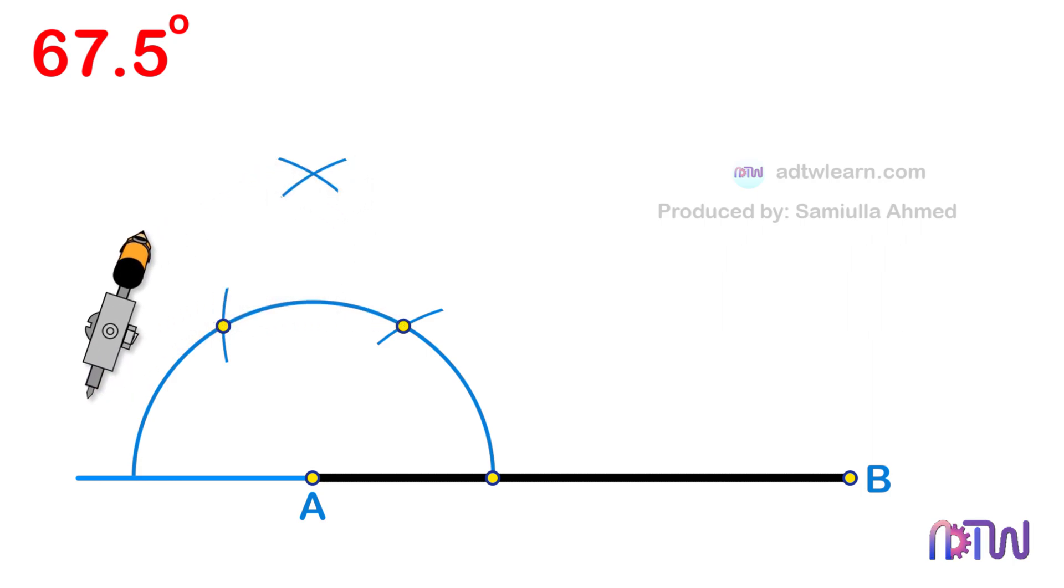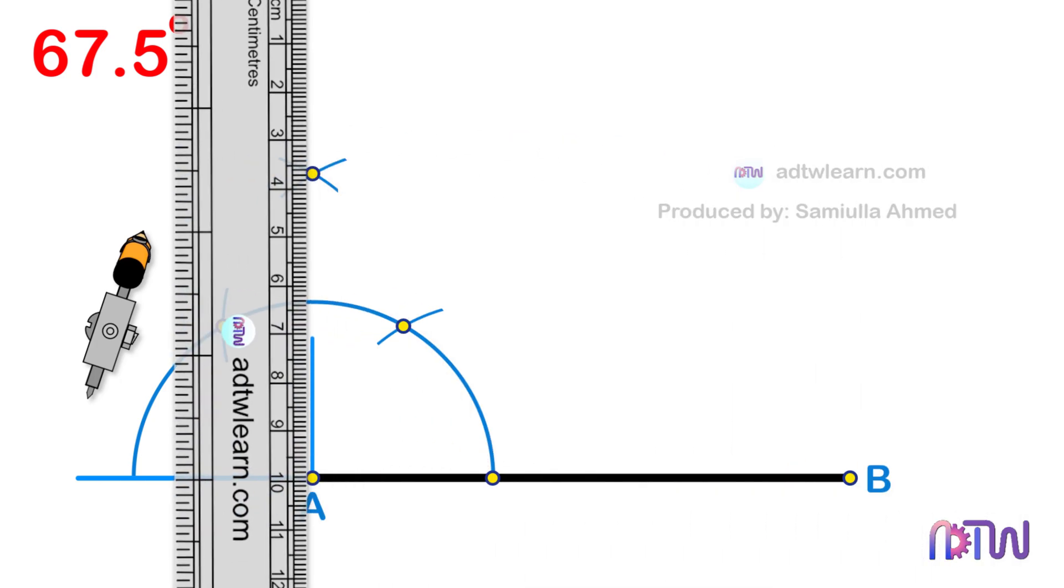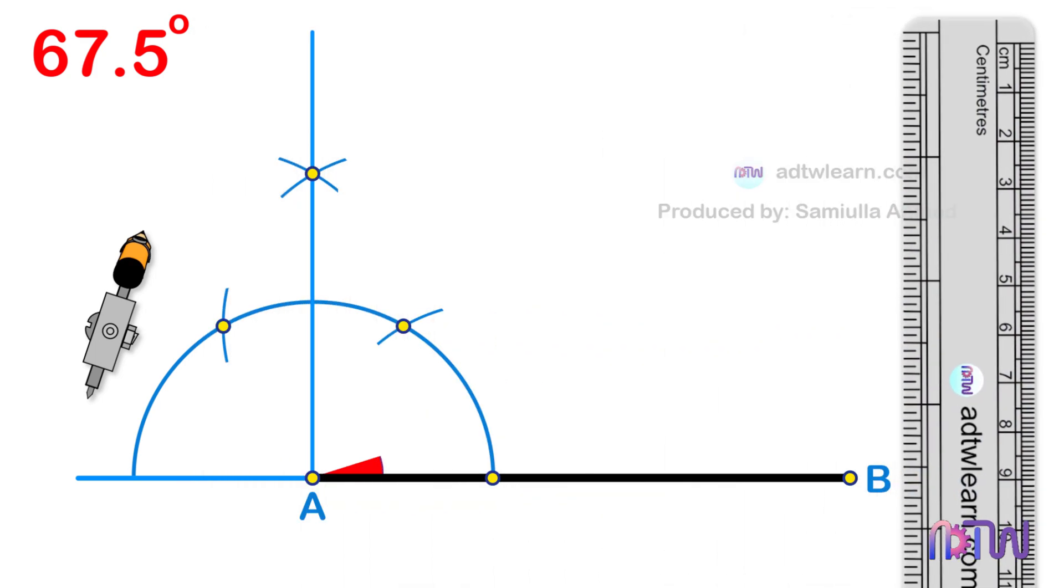After this, draw a light line passing through this point from the endpoint A of the line segment. The angle made by this line is 90 degrees with the horizontal line.